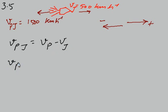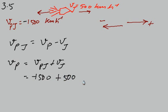Velocity of products of combustion will be equal to Vpj plus velocity of jet. Velocity of product with respect to jet is 1500 km per hour but it is in reverse direction so minus 1500 plus velocity of jet which is 500 km per hour.